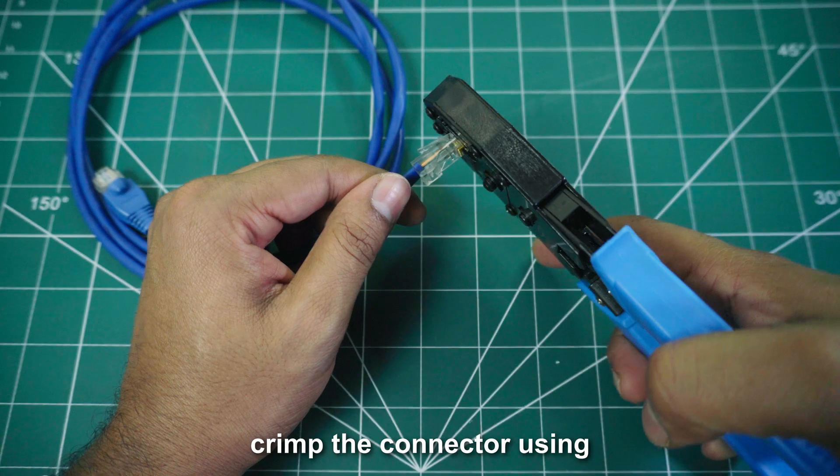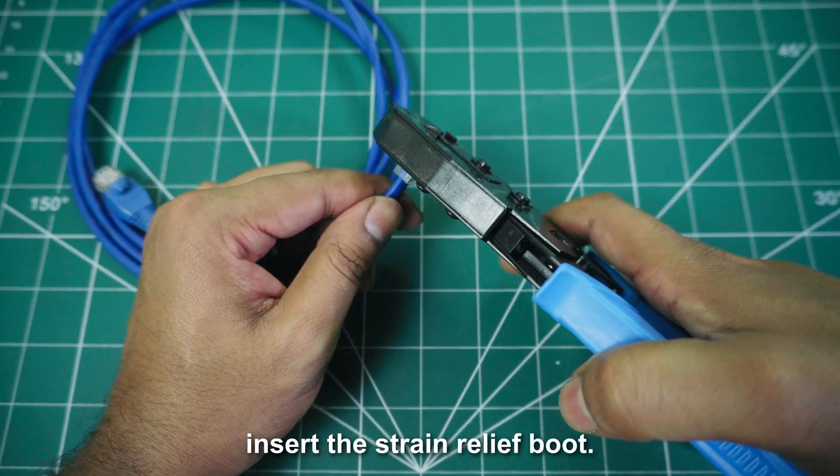Next, crimp the connector using a regular RJ45 crimping tool and insert the strain relief boot.